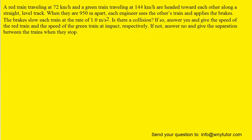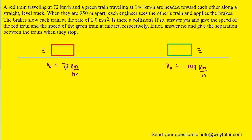What we're going to do first is draw a picture of the two trains as they approach each other. So we have the red train moving to the right with a velocity of positive 72 km per hour. The green train is moving to the left with an initial velocity of negative 144 km per hour. Note the negative sign because it is initially traveling to the left. We need to convert these km per hour into meters per second.